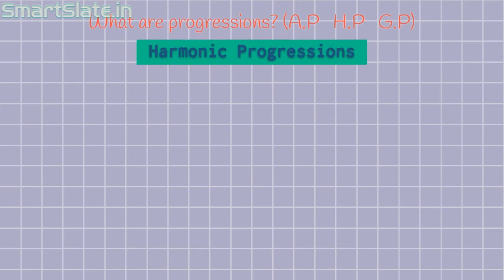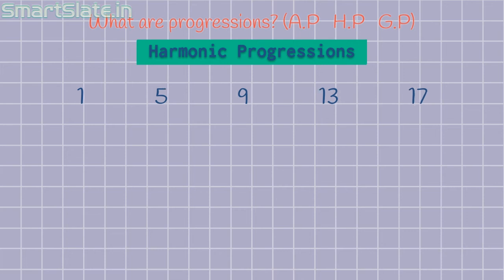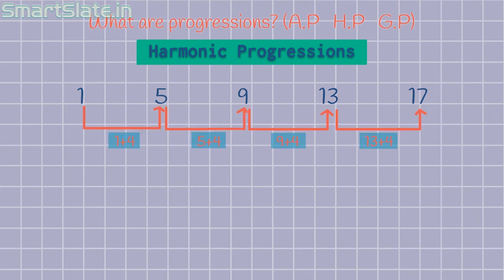Let's study about harmonic progressions. For that, I will take this example: 1, 1/5, 1/9, 1/13, 1/17. Let's find the reciprocal of all these numbers. Then the series becomes 1, 5, 9, 13 and 17. Observe this series carefully. This is an arithmetic progression with common denominator 4. Such series are called as harmonic progressions. A sequence of numbers where their reciprocals form an arithmetic progression is called a harmonic progression.